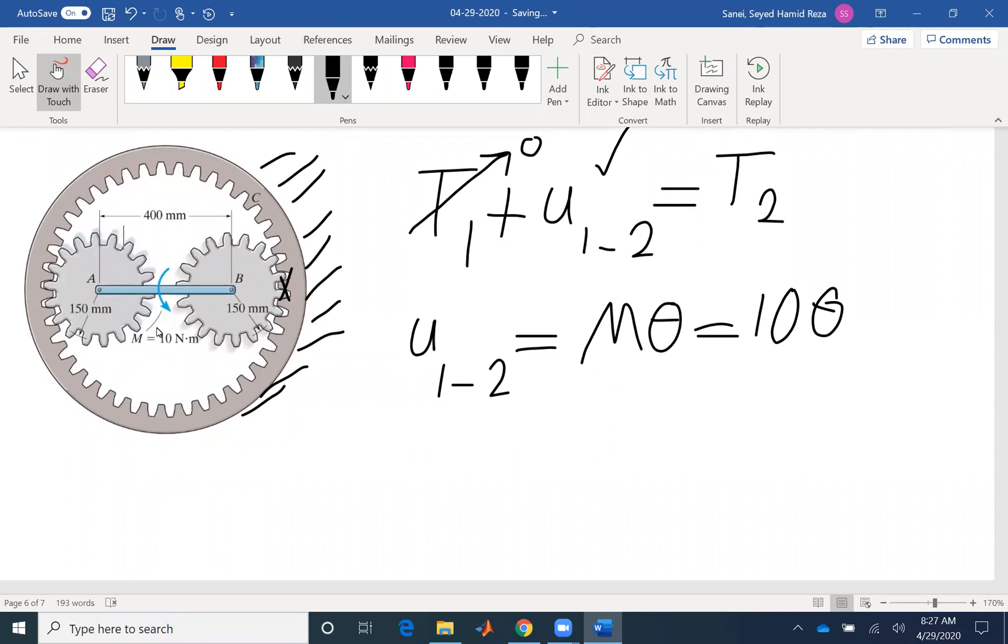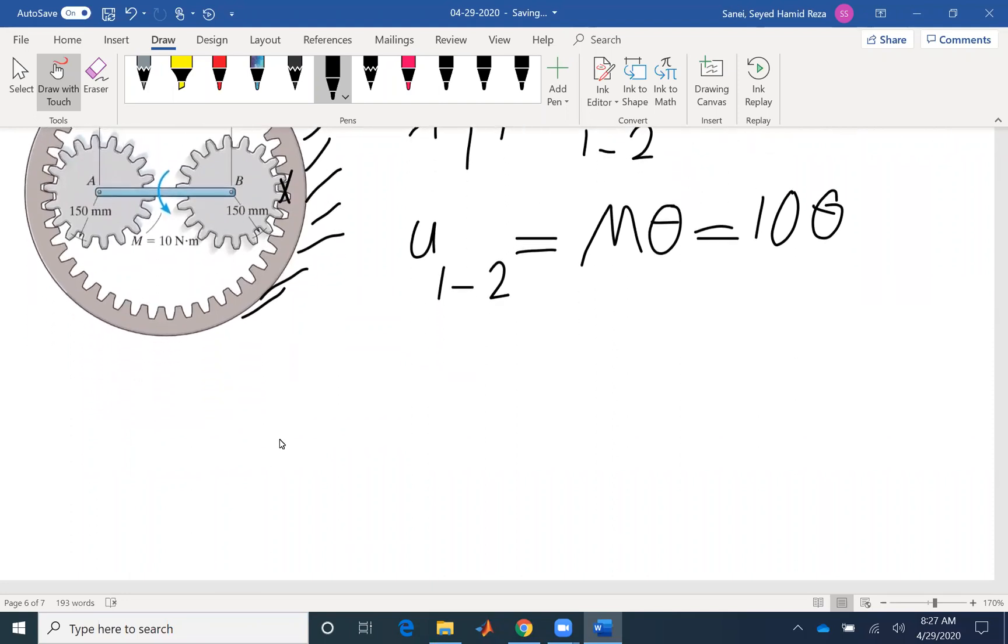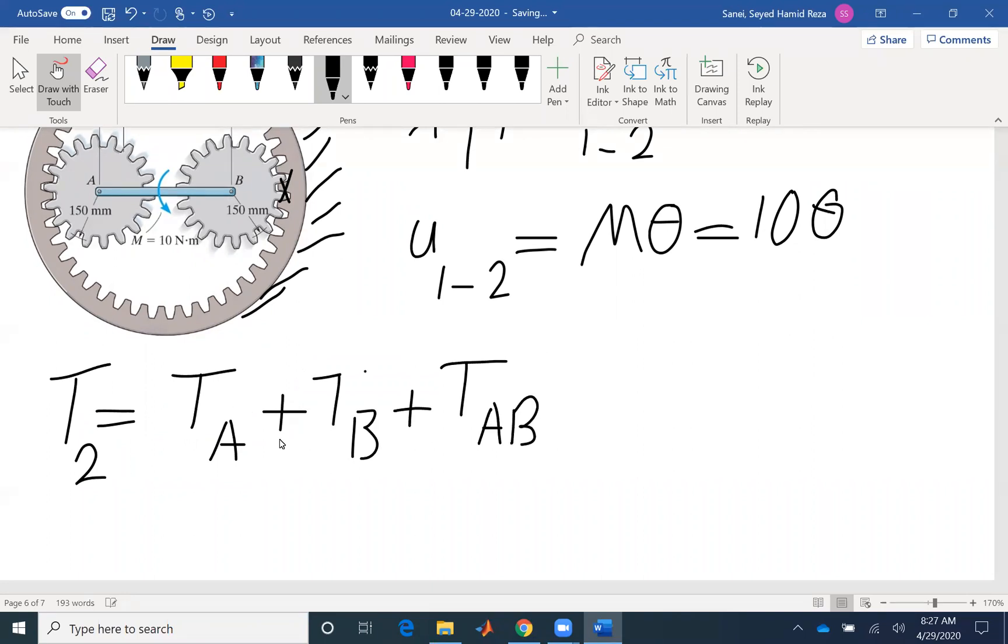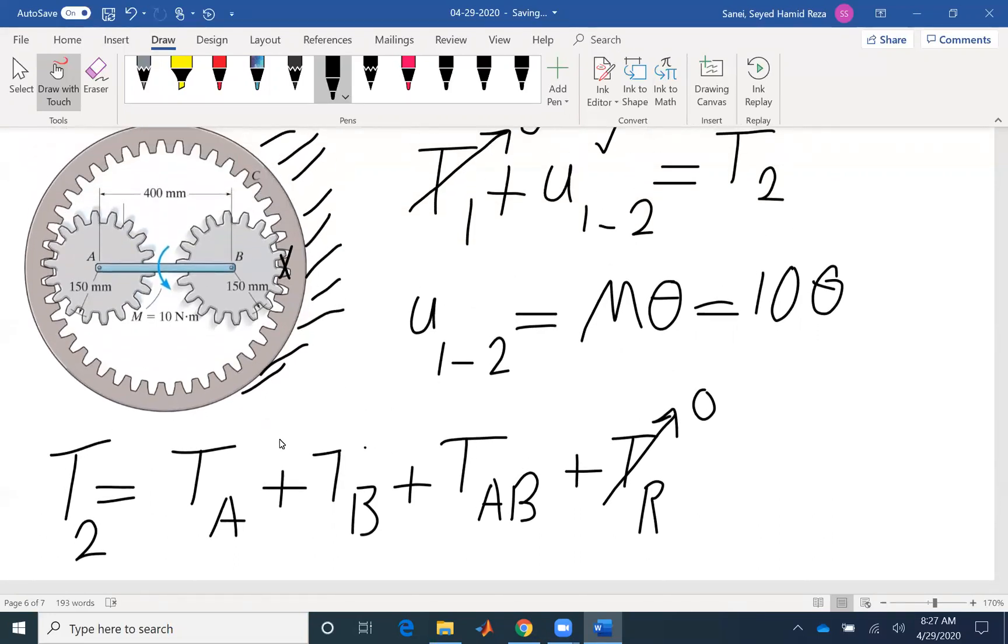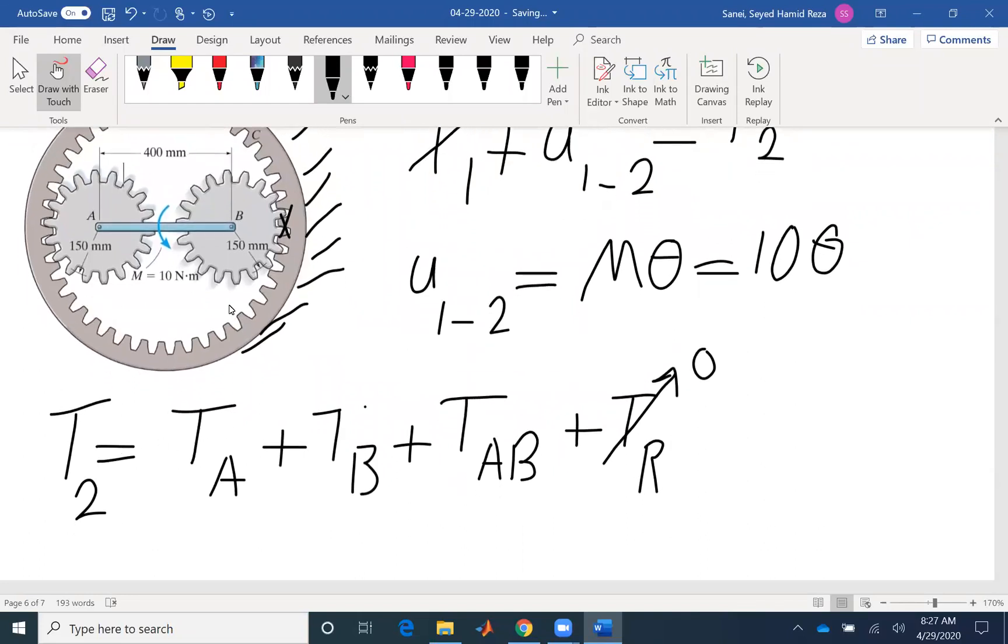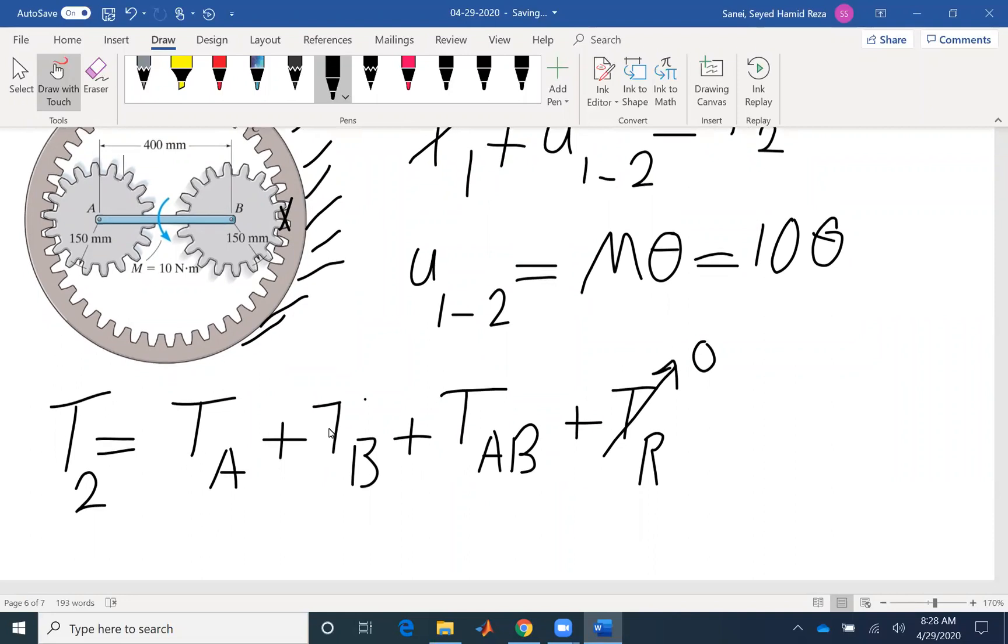We have three rigid bodies, gears A, rod AB and gear B. So we are going to have three kinetic energies. We have kinetic energy of gear A, the kinetic energy of gear B, and also the kinetic energy of our bar AB. Remember that the kinetic energy of the ring is zero because it's fixed. Looking at the problem, we can see that gear A and B are identical. They have the same dimension or they are the same distance from the center. So we can combine the two to make it easier.